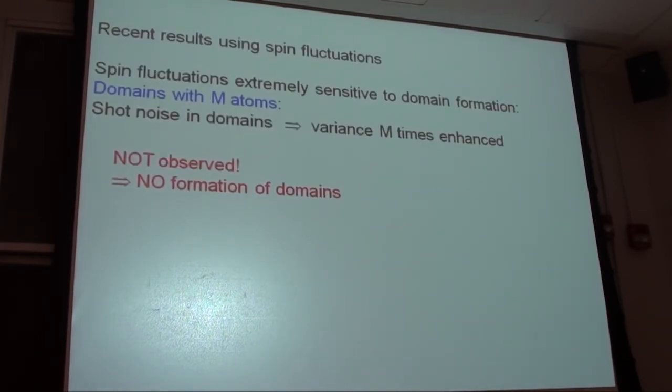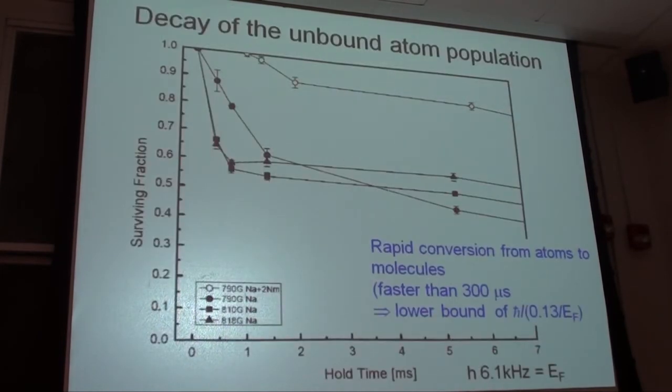I want to first give the main message that we are absolutely certain that under our experimental conditions, no domains form and ferromagnetism is not realized. Using the fast time resolution, we are now looking at the rapid decay of the atomic population. This one shows here that within hundreds of microseconds, which is very, very fast, it's almost comparable to the inverse Fermi energy, about 50% of the atoms convert to molecules.